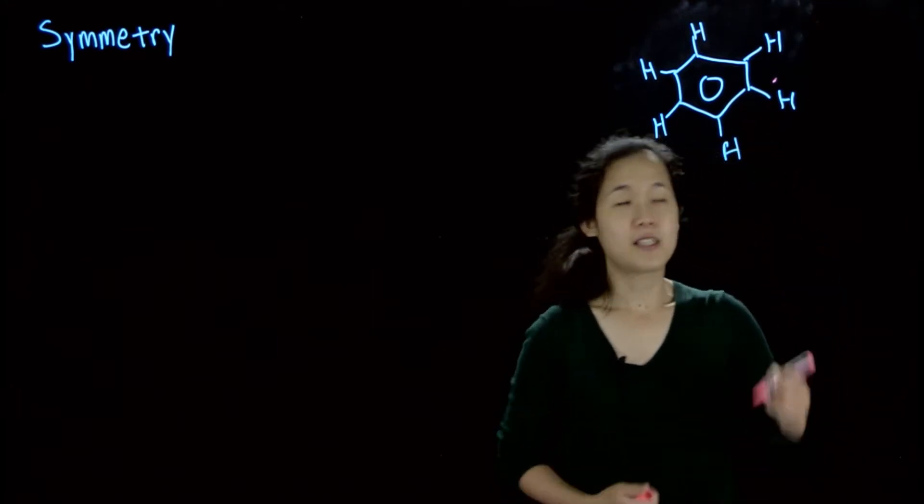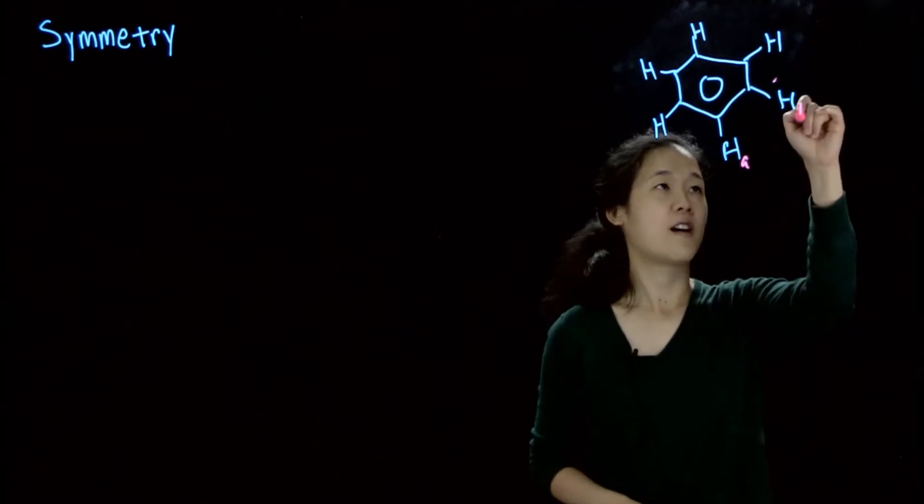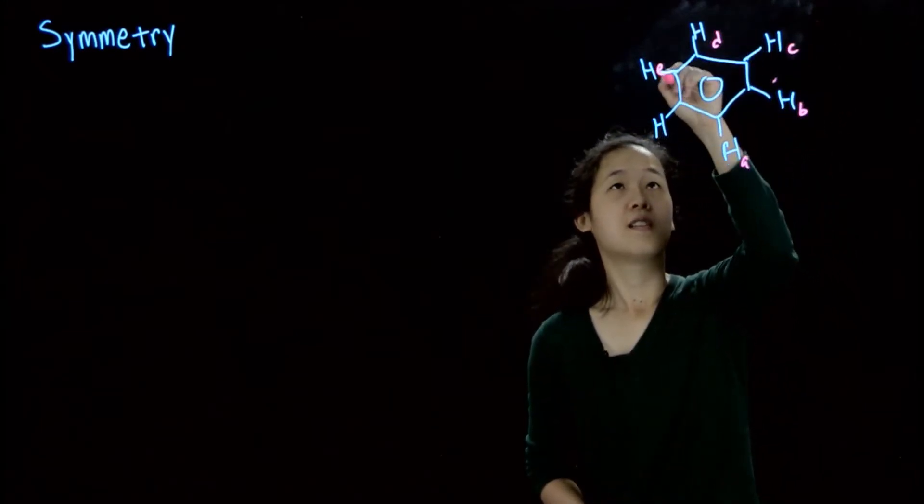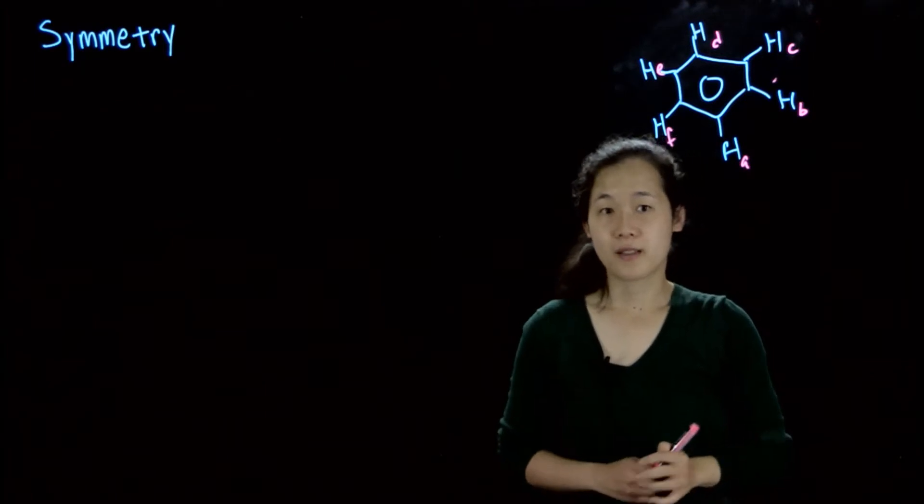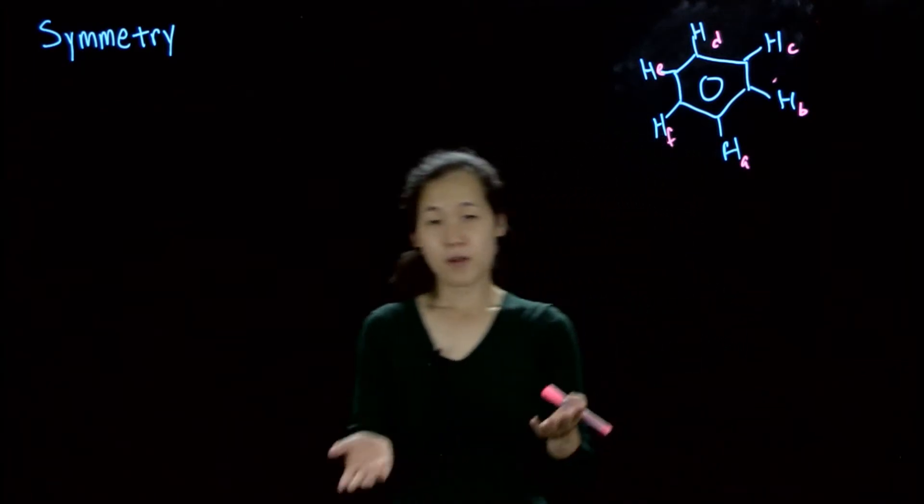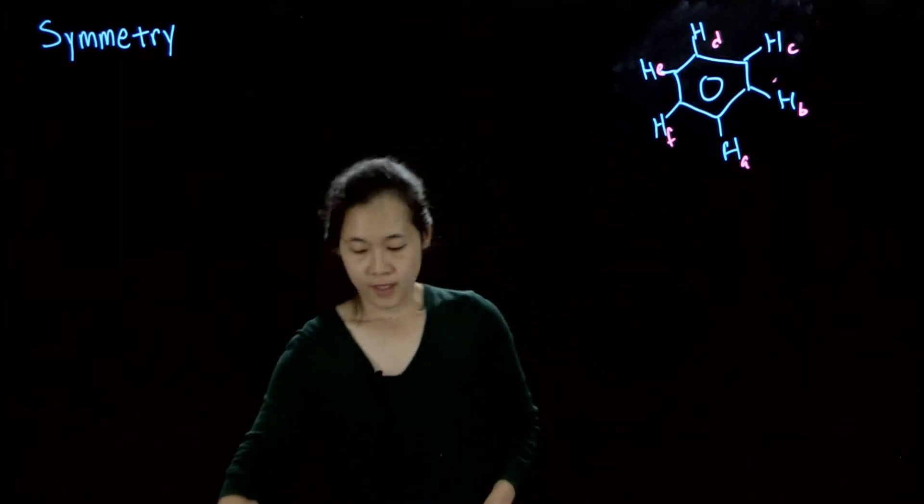And so this is because, of course, although you have six different protons, these are all related by symmetry. So because they can be related by symmetry, then you only see that one signal because they're all equivalent. For this class, being able to more quantitatively identify the symmetry of each molecule is going to be really critical.